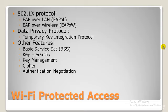WPA, like its predecessor WEP, has been shown via both proof of concept and public demonstration to be vulnerable to intrusion. Interestingly, WPA is usually breached not by a direct attack on the WPA algorithm itself, but by attacks on Wi-Fi Protected Setup — WPS — a supplementary system that was rolled out with WPA. WPS was designed to make it easy to link devices to modern access points.